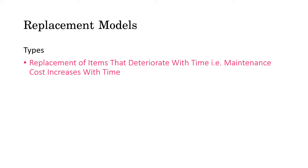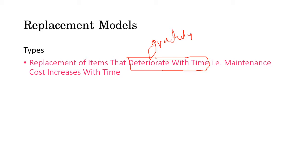Let's briefly list down the types of replacement models in your syllabus. First, we are going to consider the class of items that gradually deteriorate with time — as opposed to items that deteriorate suddenly, like light bulbs. Machines generally deteriorate gradually, and the maintenance cost increases with time.